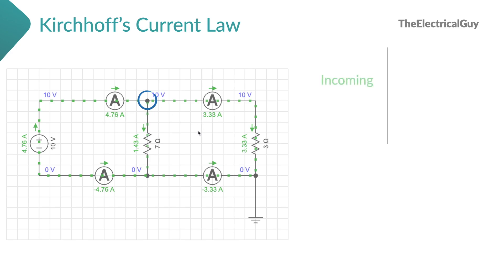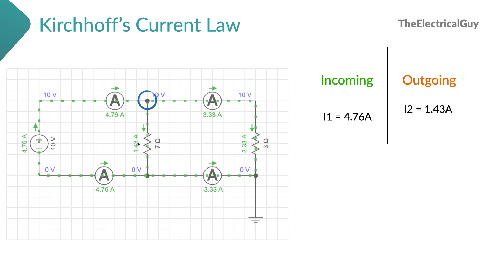Let's label these currents here. The incoming current — we have only one current, that is 4.76 ampere — we will label it as I1. Now talking about the outgoing currents, there are a total of two outgoing currents: one is 3.33 ampere and the second one is 1.43 ampere. We will label 1.43 as I2 and 3.33 as I3. So one incoming current and two outgoing currents.